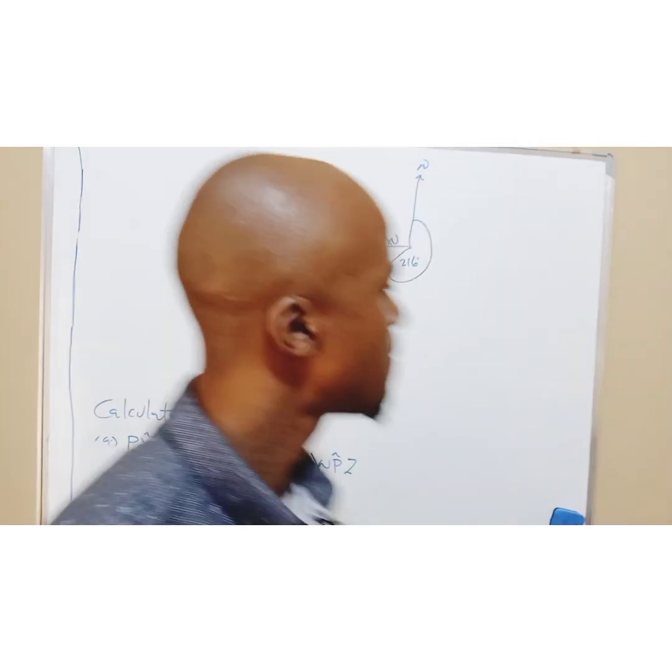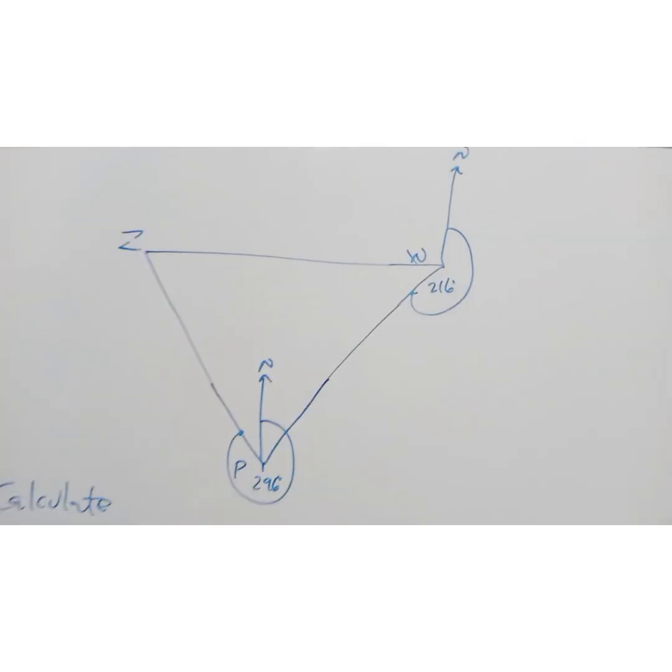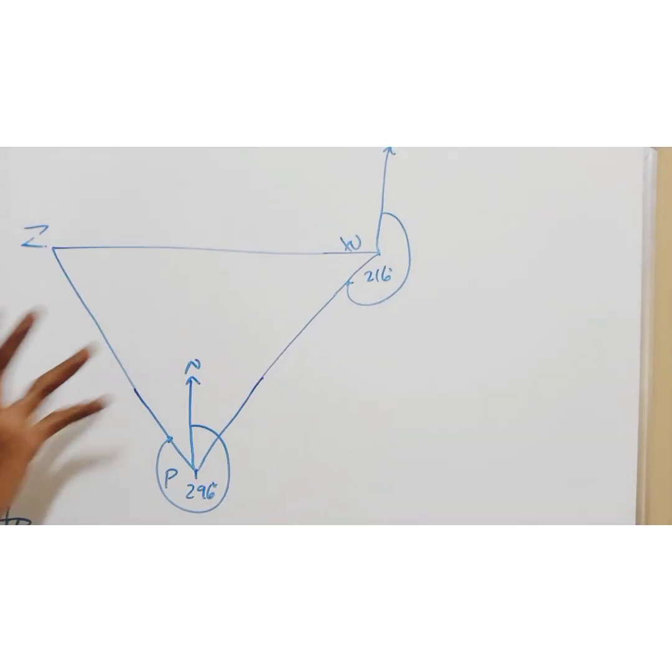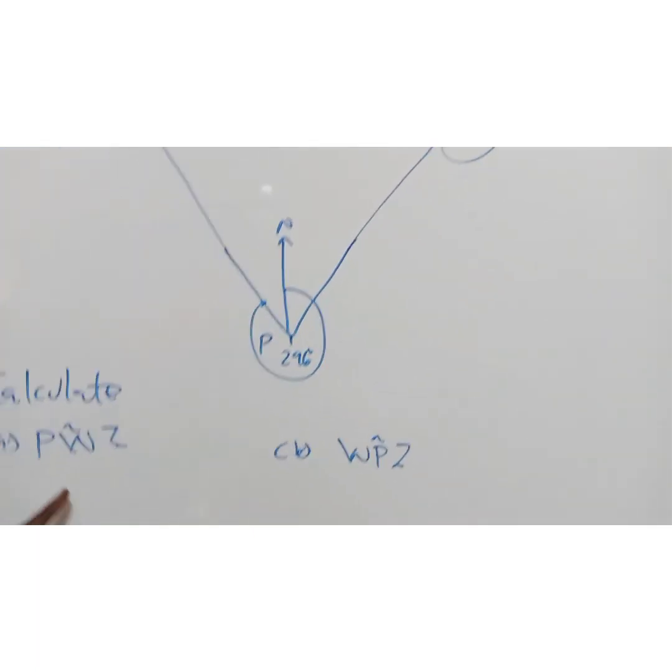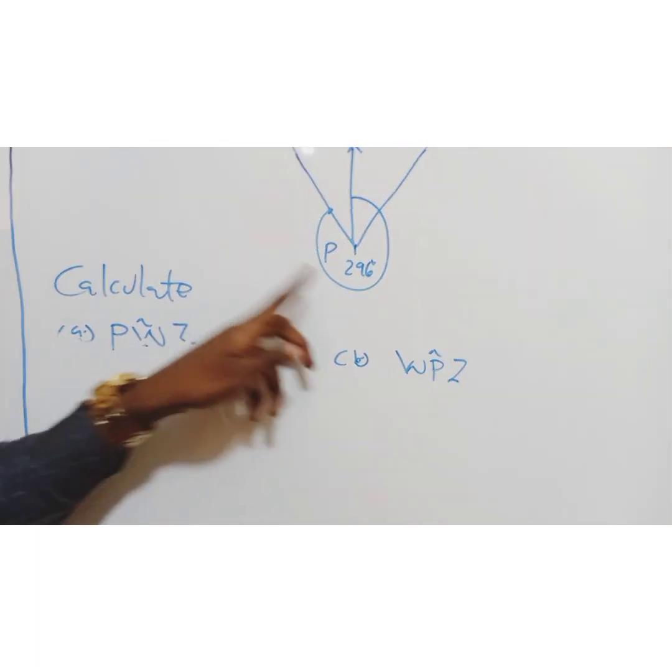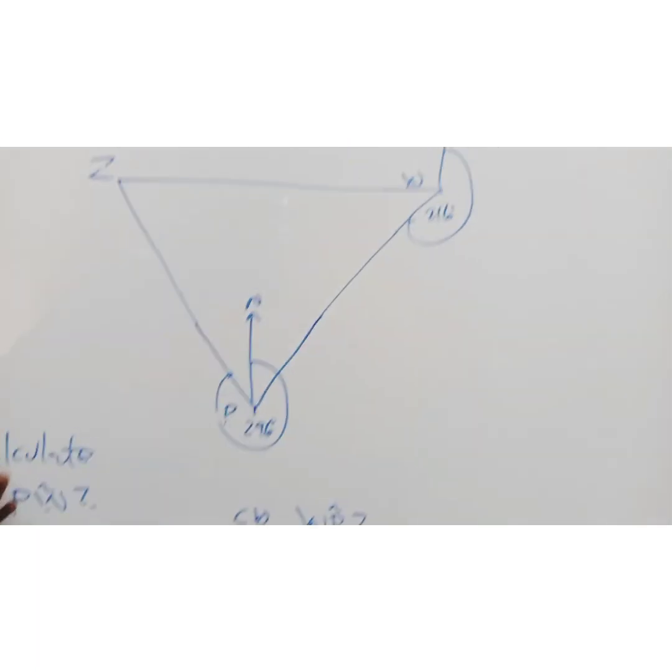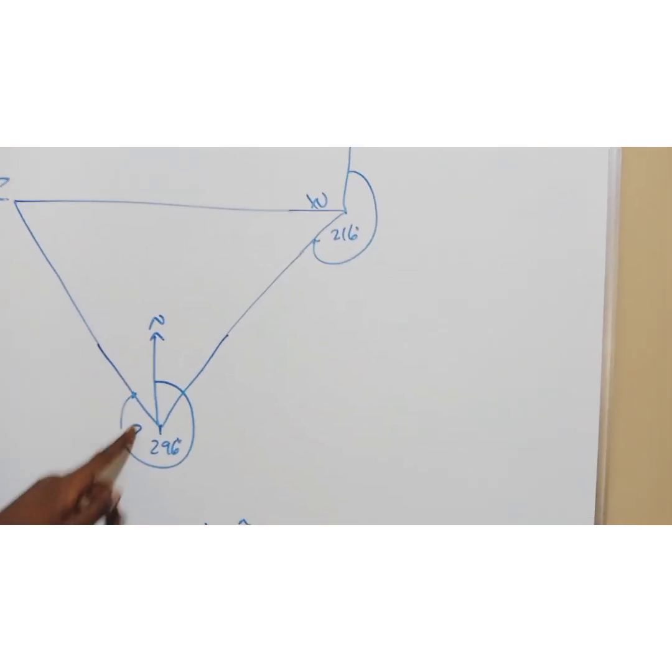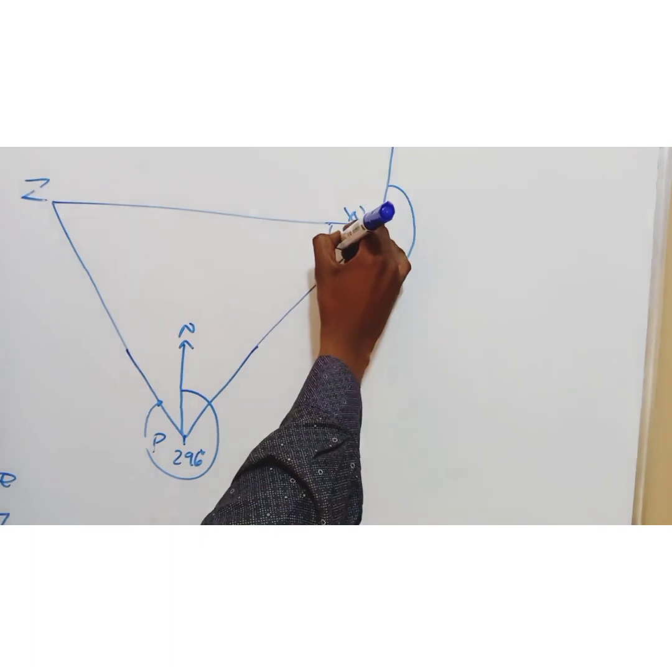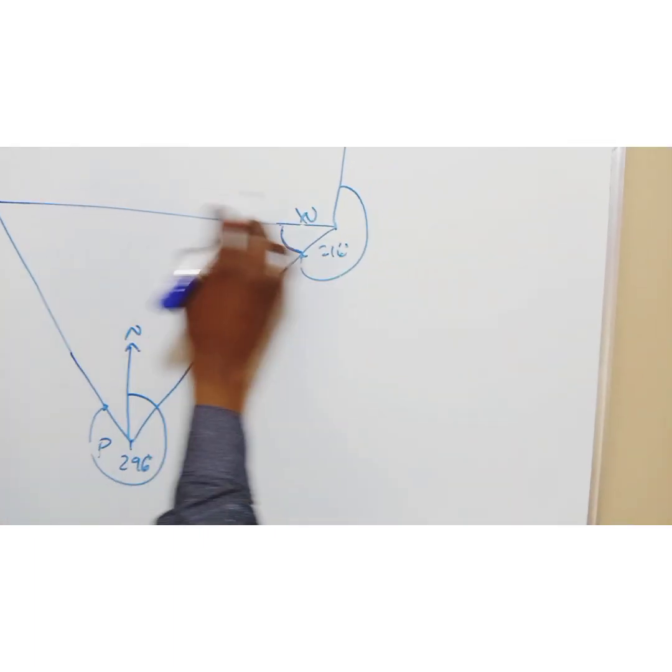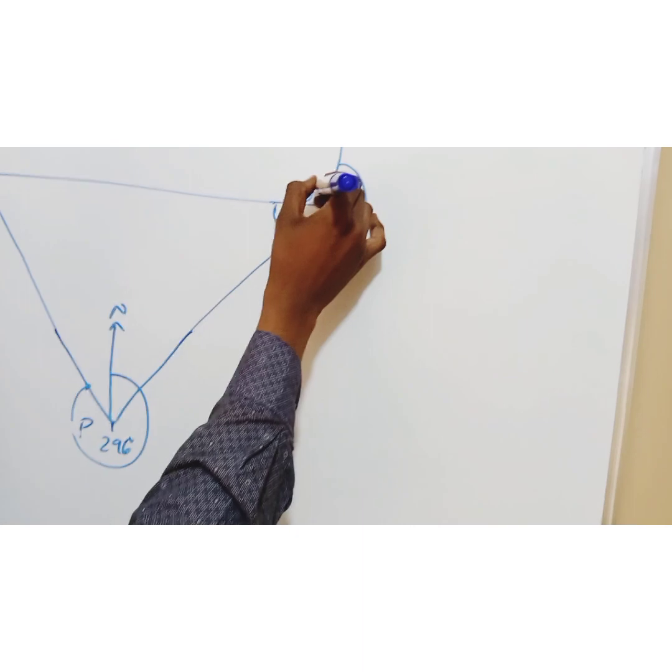So come with me. I gave you this question, this is the diagram. The first question they were asking us to find PWZ, so P, this is not bearing, they're asking for angles. PWZ, this small thing here.